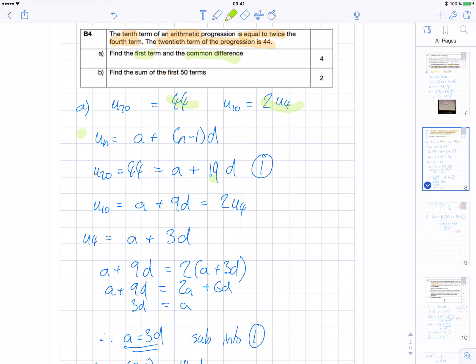I know that u10 is a plus 9d. 10 take away 1 is 9. If you wonder where I'm getting the 9 from, 10 is what n is. So 10 take away 1 is 9, 9d. And that's equal to 2 times u4. But u4 is a plus 3d because 4 take away 1 is 3.